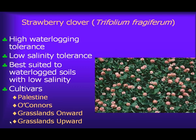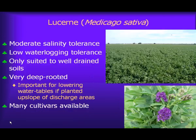In terms of perennial legumes, strawberry clover has good waterlogging tolerance but its salinity tolerance is reasonably low. It's best suited to waterlogged soils with fresh water or low salinity levels. Palestine is the original cultivar used in Australia, but there are others including O'Connor's and two New Zealand ones: Grasslands Onward and Grasslands Upward. Lucerne is another perennial species sometimes associated with saline areas — it has moderate salinity tolerance but its waterlogging tolerance is quite low, so it's only suited to well-drained soils. It is very deep rooted and has an important role in helping to lower water tables if planted upslope of discharge areas. There's a whole range of Lucerne cultivars available and they don't really differ greatly in their salinity tolerance.